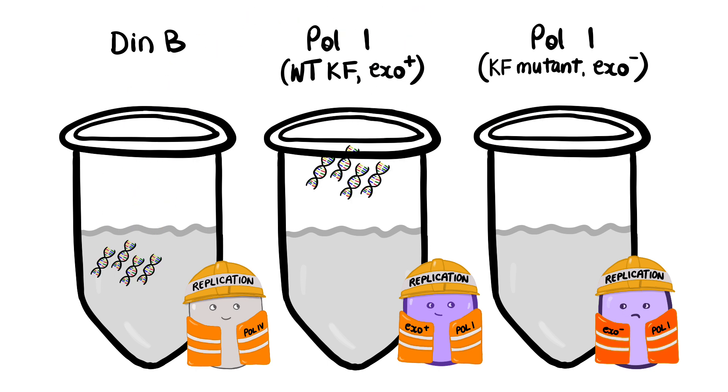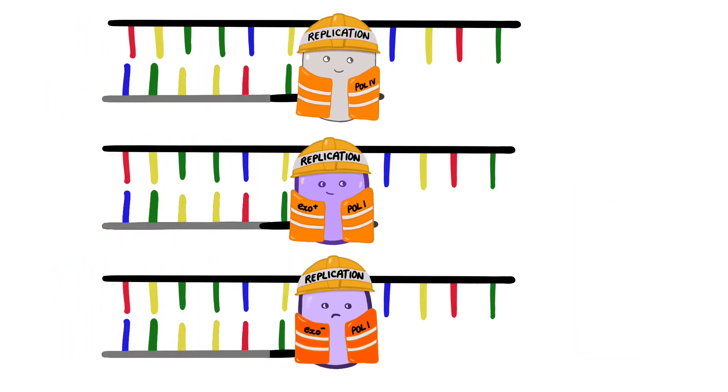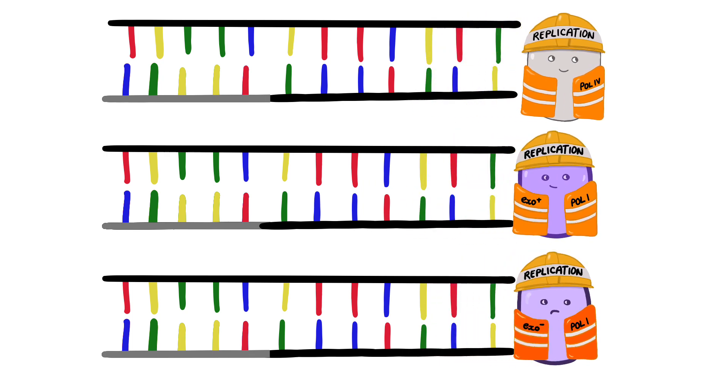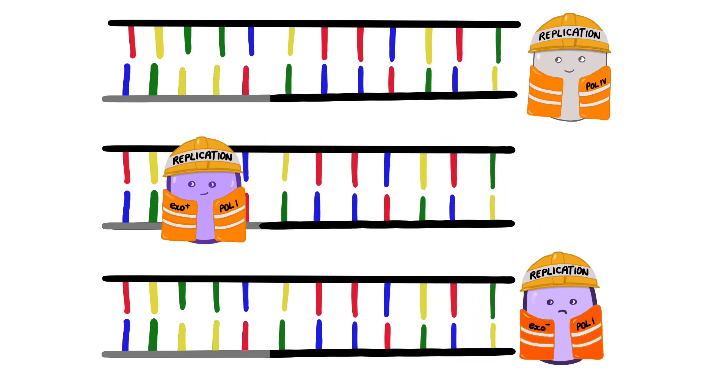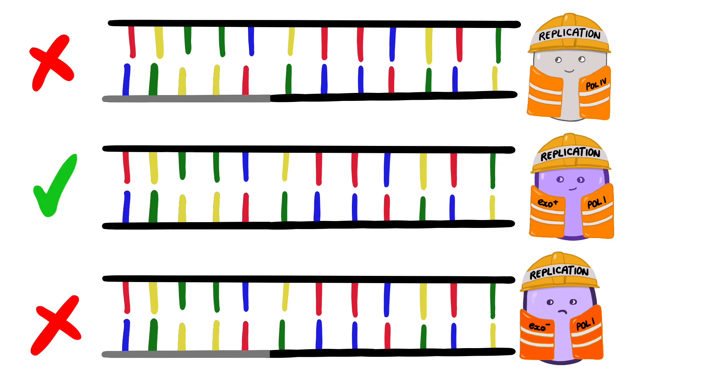Extension products were compared from DIN B, Pol1, and a known Pol1 mutant, which lacked proofreading ability. The only one which went back and replaced the primers was wild-type Pol1, which was known to show exonuclease activity. This proved that like the Pol1 mutant, Pol4 had no proofreading mechanism.